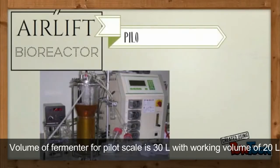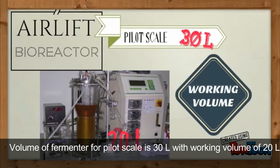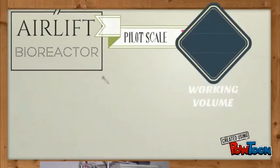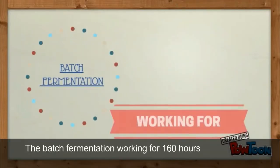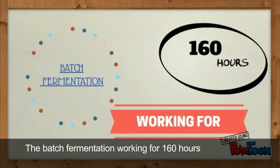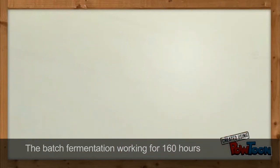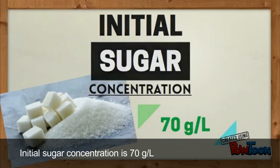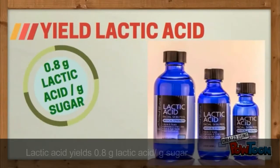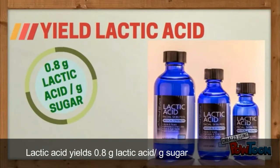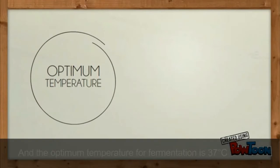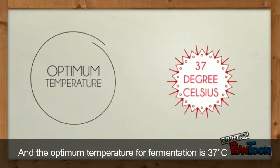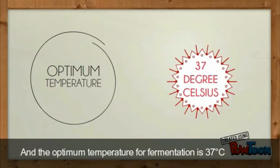Volume of fermenter for pilot scale is 30 liters with working volume of 20 liters. The batch fermentation works for 160 hours. Initial sugar concentration is 70 grams per liter. Lactic acid yield is 0.8 grams lactic acid per gram sugar. And the optimum temperature for fermentation is 37 degrees Celsius.